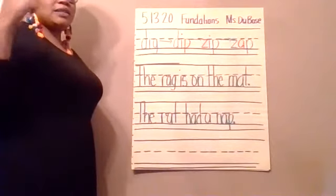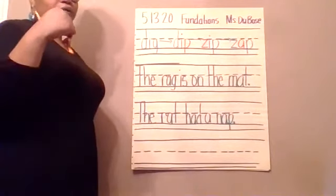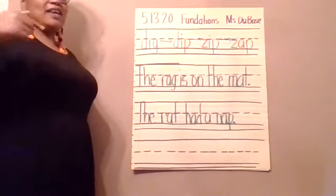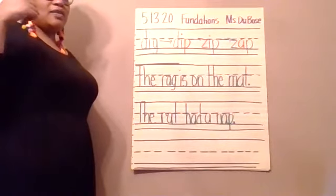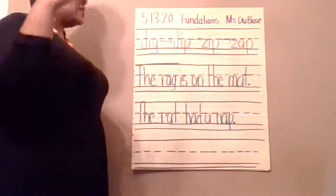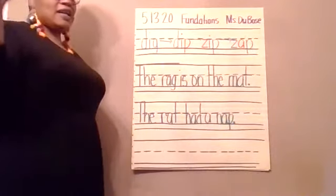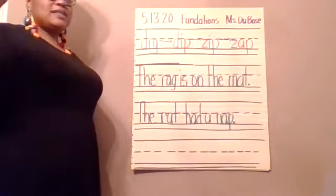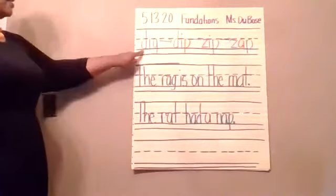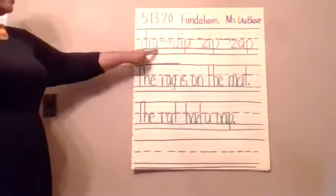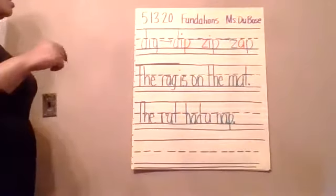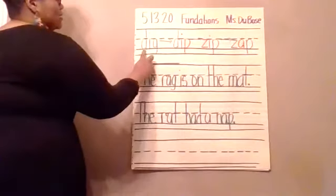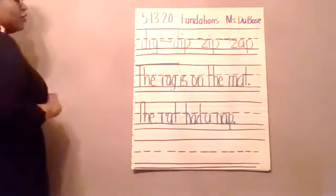The first sound is d, the second sound is i, and the last sound is g — d, i, g. What word is that, friends? Dig. It is dig. Dig is spelled D-I-G.